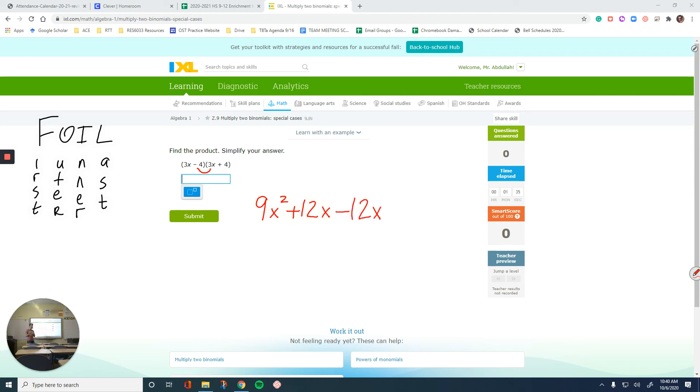The last thing is multiplying the last terms. So the last terms are over here. Negative 4 is the last term of the first binomial. Positive 4 is the last term of the second binomial. We have one negative, one positive. When you multiply them, you end up with a negative number. 4 times 4 is 16. Now what you need to realize is that this 12x is positive and that one is negative. They cross each other out. They cancel each other out.